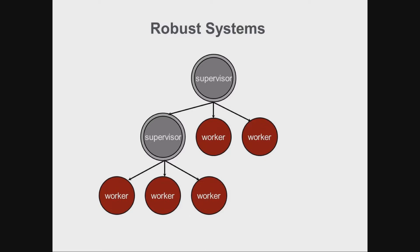In any Erlang-based system, fault tolerance is achieved by creating what we call supervision trees, where supervisors are the nodes and workers are the leaves. In the Erlang world, we tend to show processes which are trapping exits with a double ring, and more often than not they are supervisors.